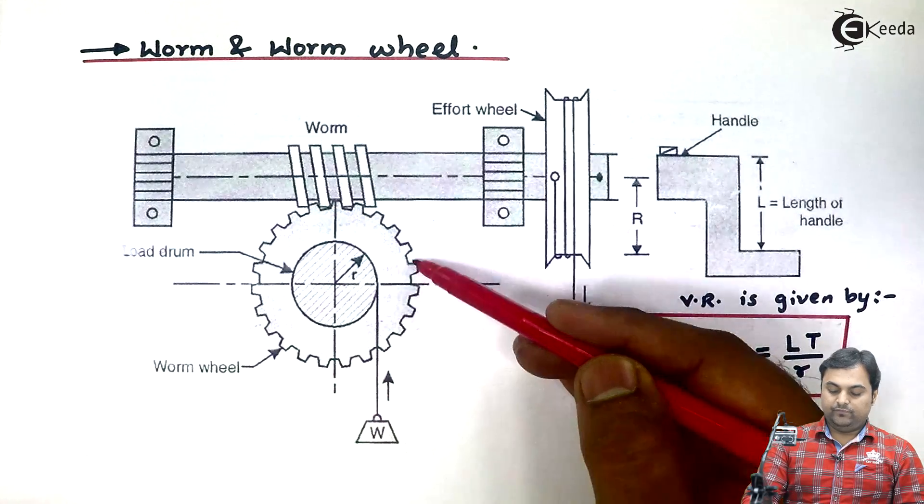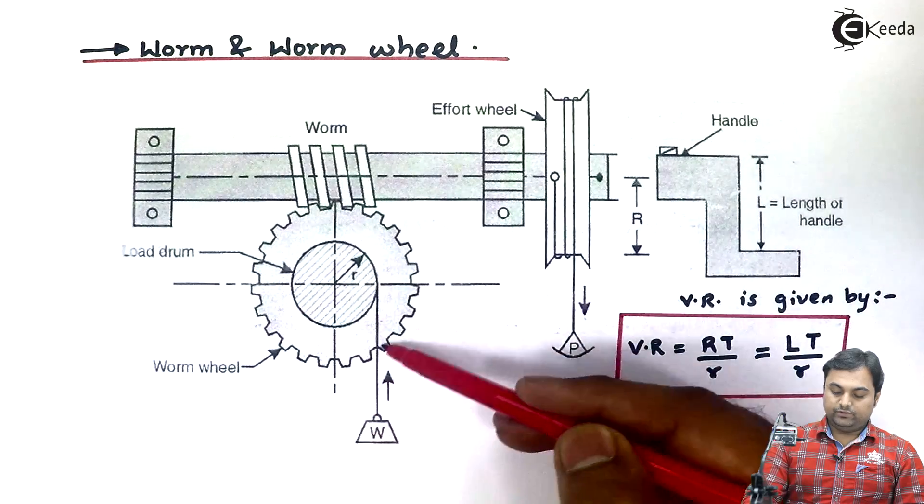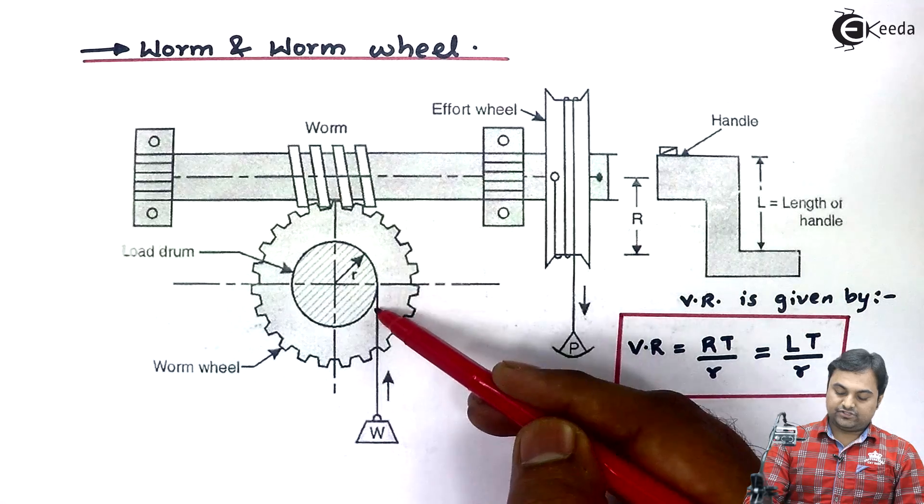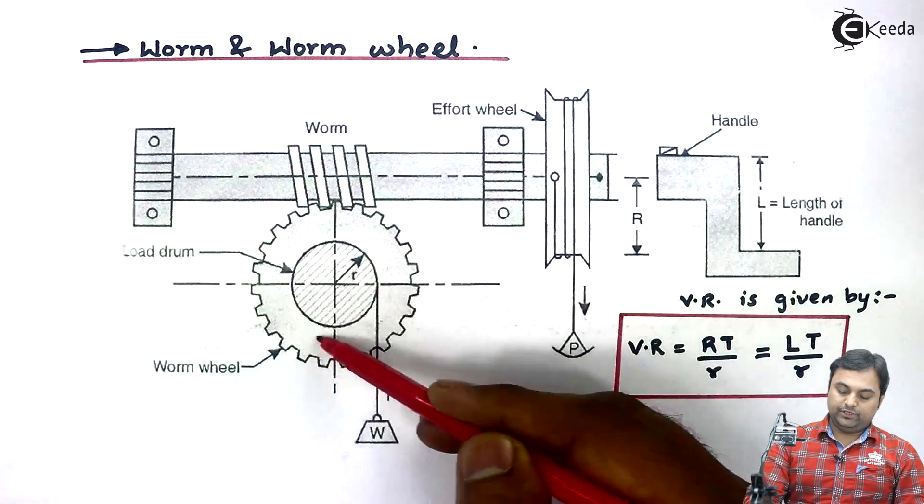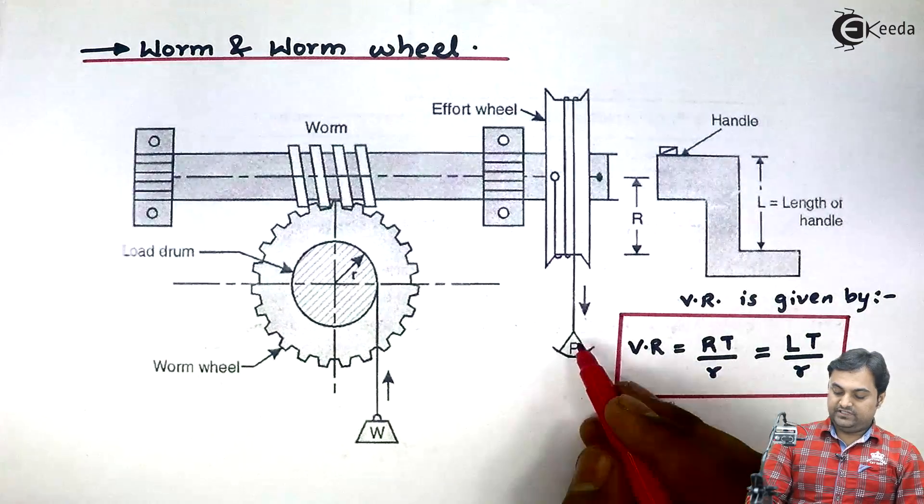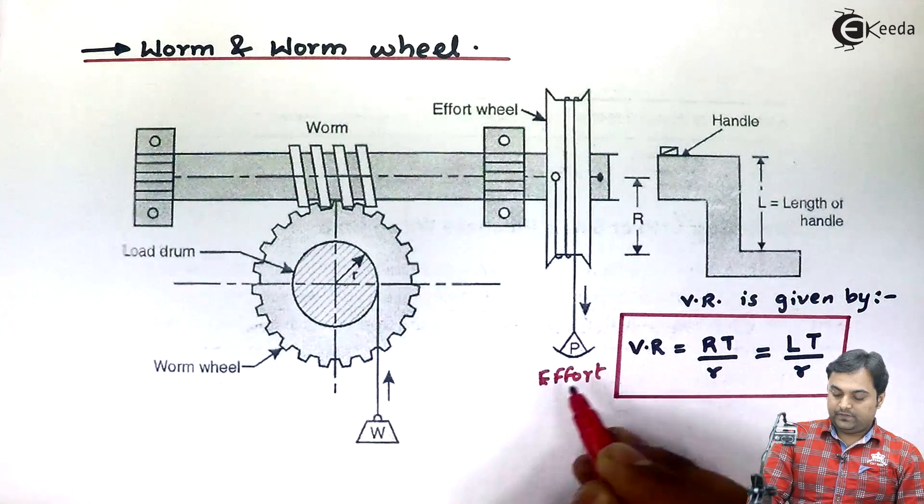And when the worm rotates it is in mesh with the worm wheel. This worm wheel would be rotating and when the worm wheel rotates along with it the load drum would be rotating and the string would be wound up onto the load drum and hence the load is lifted. So here the input is the effort which we are applying, output is the load which gets lifted.